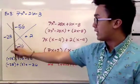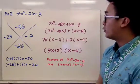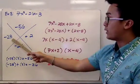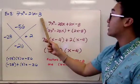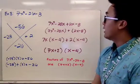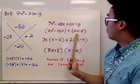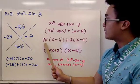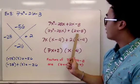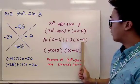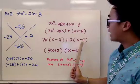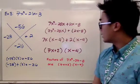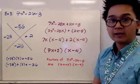Moving to stage two: rewrite the equation as 7x squared minus 28x plus 2x minus 8. Grouping gives (7x squared minus 28x) and (2x minus 8). The GCF of the first group is 7x, leaving (x minus 4). The GCF of the second group is 2, also leaving (x minus 4). With both parentheses identical, we factor out (x minus 4), leaving (7x plus 2). The factors of 7x squared minus 26x minus 8 are (7x plus 2) and (x minus 4).